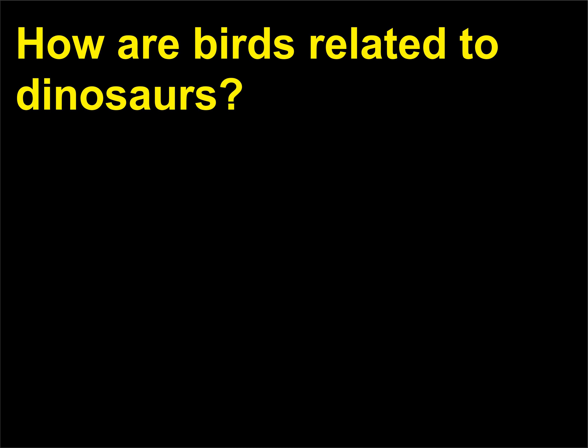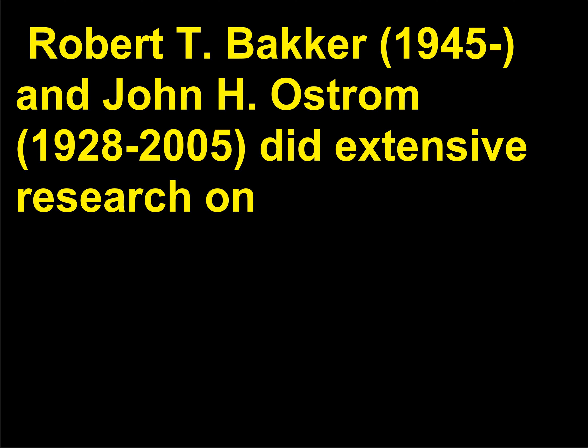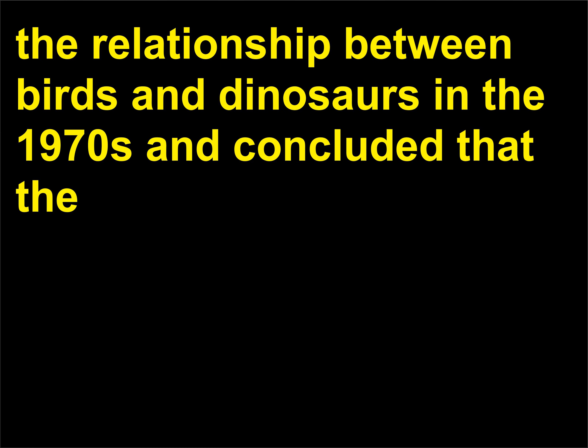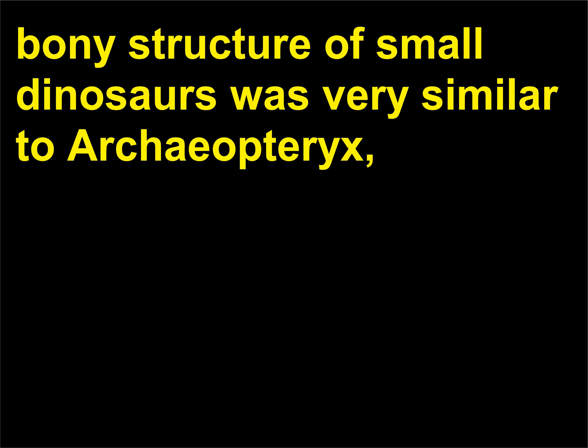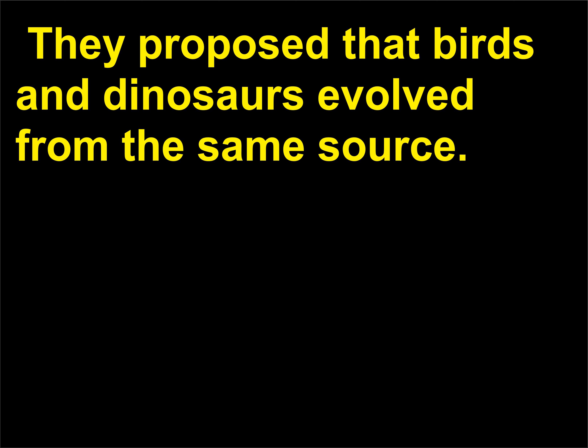How are birds related to dinosaurs? Birds are essentially modified dinosaurs with feathers. Robert T. Bakker, 1945, and John H. Ostrom, 1928–2005, did extensive research on the relationship between birds and dinosaurs in the 1970s and concluded that the bony structure of small dinosaurs was very similar to Archaeopteryx, the first animal classified as a bird, but that dinosaur fossils showed no evidence of feathers. They proposed that birds and dinosaurs evolved from the same source.